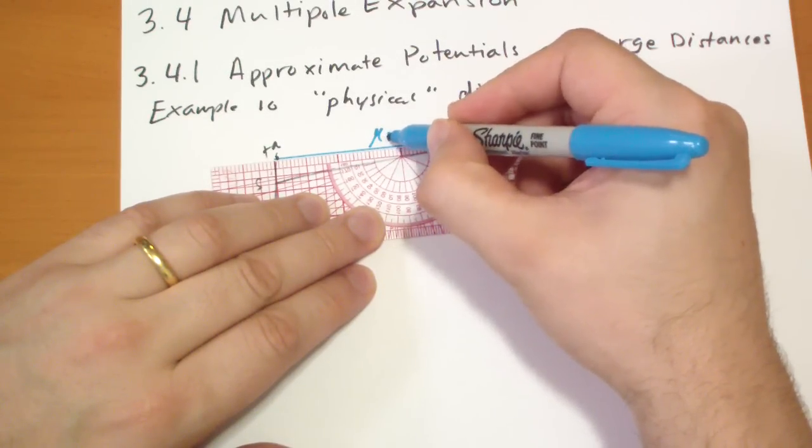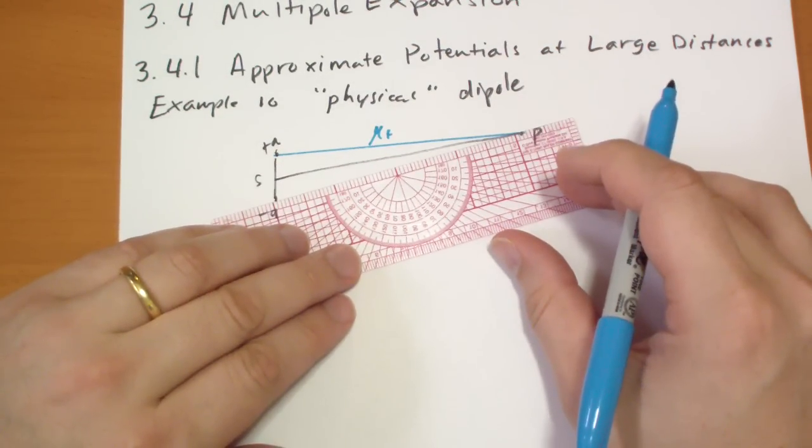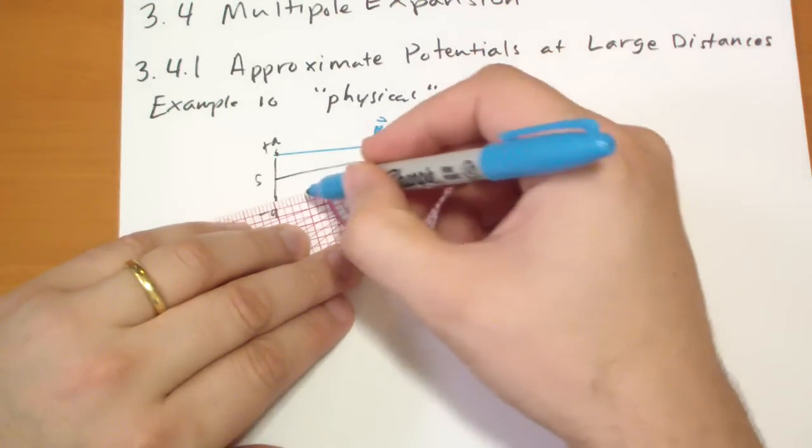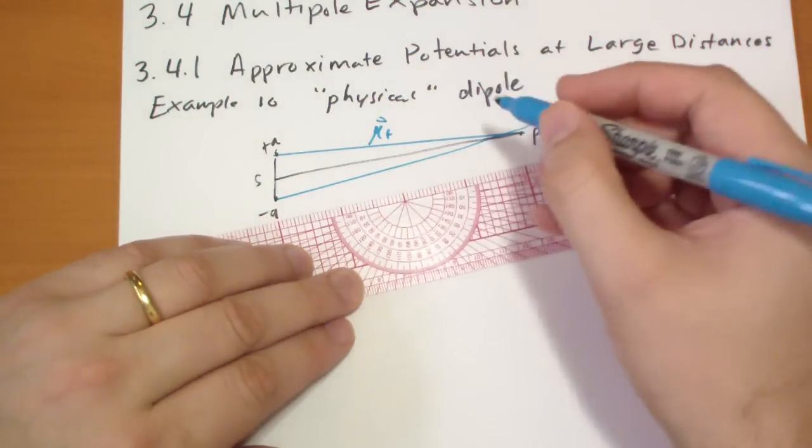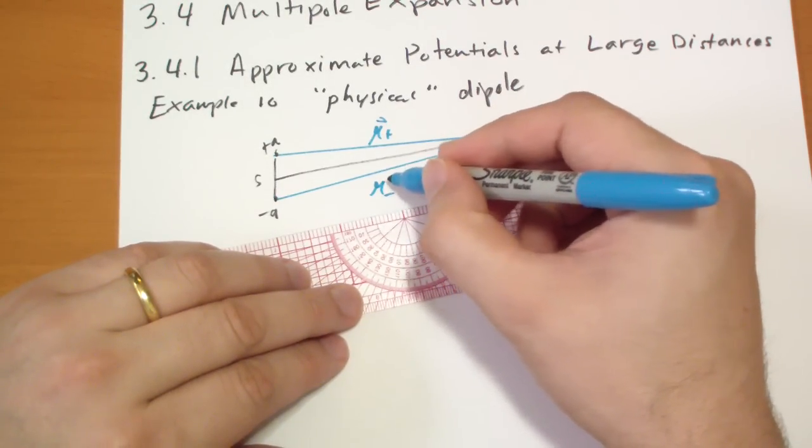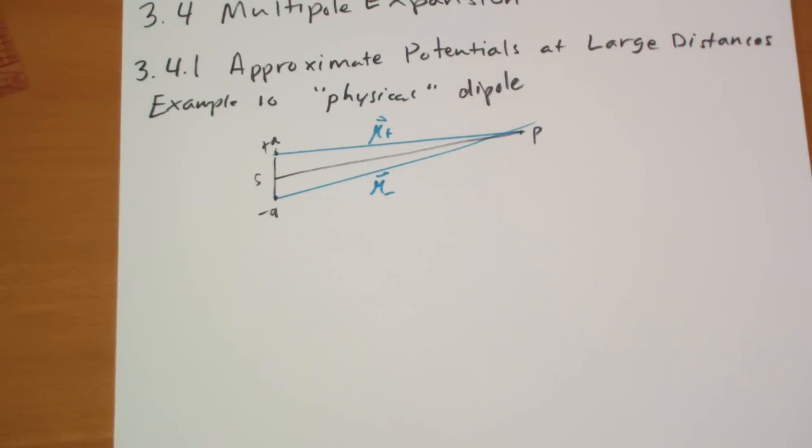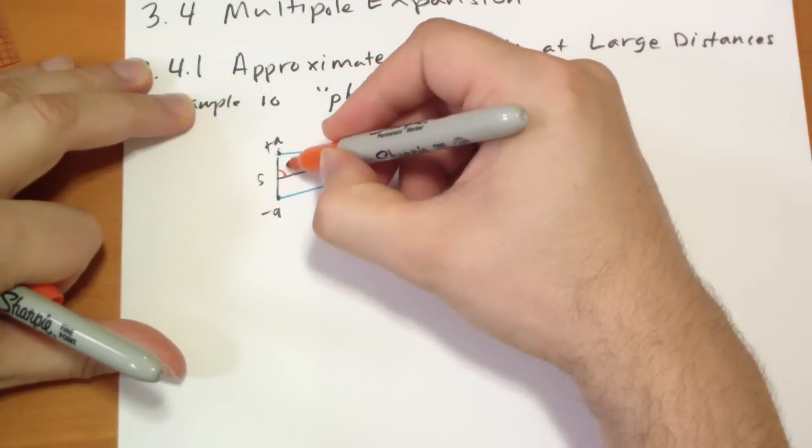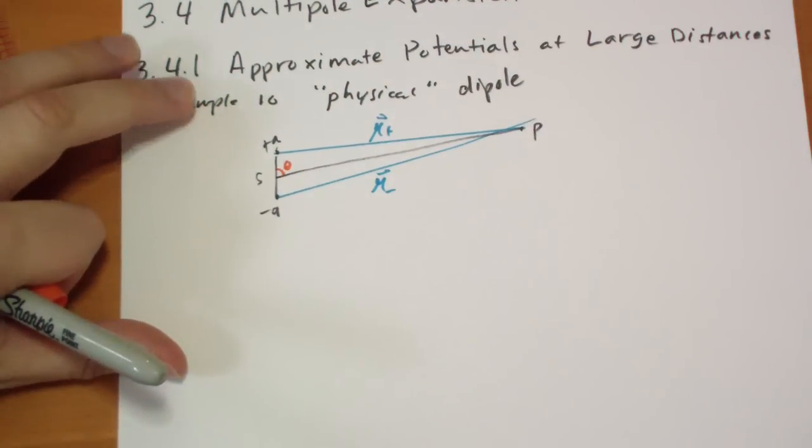So we have our two vectors pointing from these to P. That is the R of the positive one. That's a vector. And that is, and I screwed it up anyway, the R of the negative one. And we have some angle theta. This is theta. And this is, of course, pi minus theta on the bottom there.